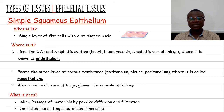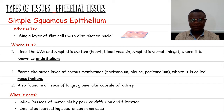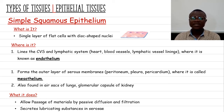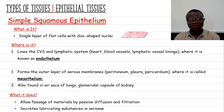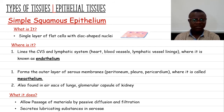In discussing each type of tissue, we will ask and answer three questions: what is it, where is it found, and what does it do? Simple squamous epithelium is a single layer of flat cells that have a disc-shaped nucleus.